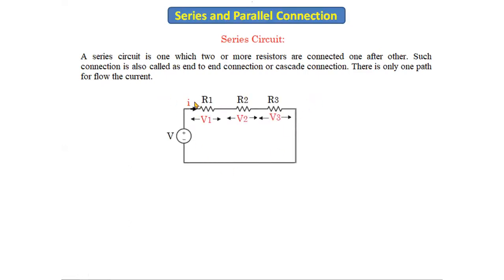In this series connection, R1, R2, R3 are connected in series. R1's second terminal is connected to R2's first terminal, and R2's second terminal is connected to R3's first terminal — like this, R1, R2, R3 are connected end-to-end. The current flowing through each and every resistor is same because there are no other branches — there is only one branch, only one path for current to flow.